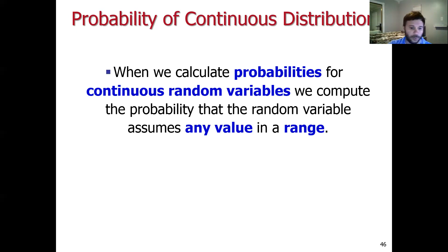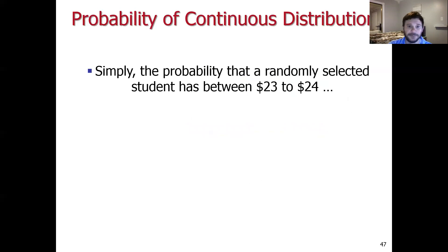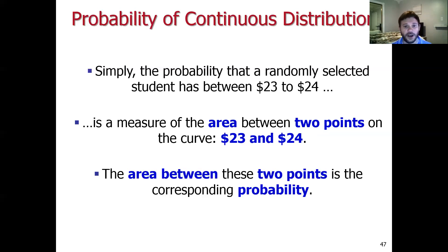Rather than asking what's the probability of exactly $23.81 in your pocket, we can think about what is the probability that you have between $23 and $24 on you, given a particular continuous distribution governing the random variable. We're going to think about this as measuring the area between two points underneath a bell-shaped curve — capturing the area between two points underneath a probability density function as measuring the probability associated with the random variable realizing within that range.